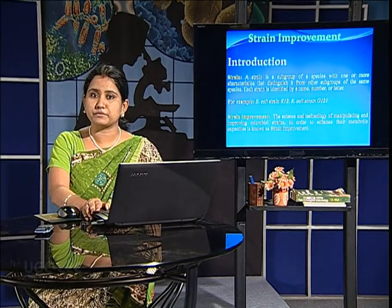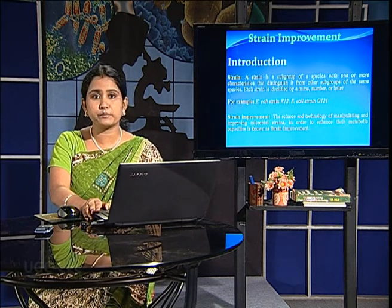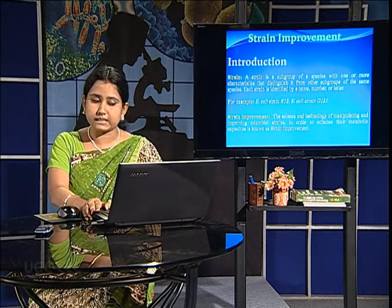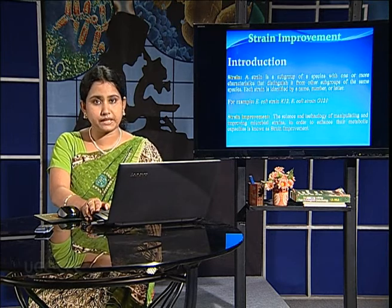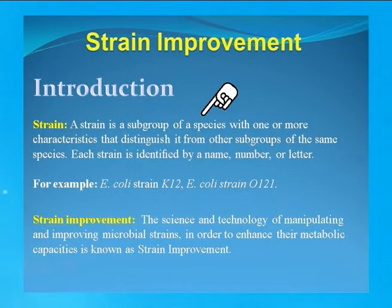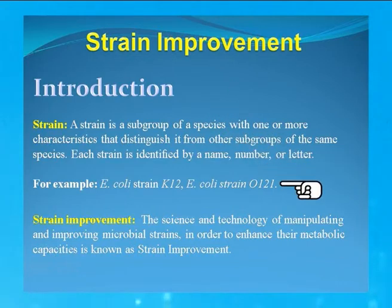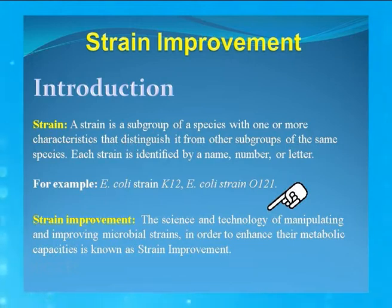Next we move on to the second point, which is strain improvement. Before going into the details, we should know what a strain is. A strain is a subgroup of a species with one or more characteristics that distinguish it from other subgroups of the same species. Each strain is identified by a name, number, or letter — for example, E. coli strain K-12 or E. coli strain O-121. The term strain improvement means the science and technology of manipulating and improving microbial strains in order to enhance their metabolic capacities.